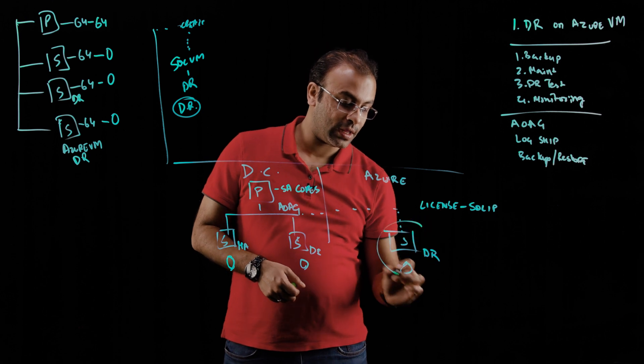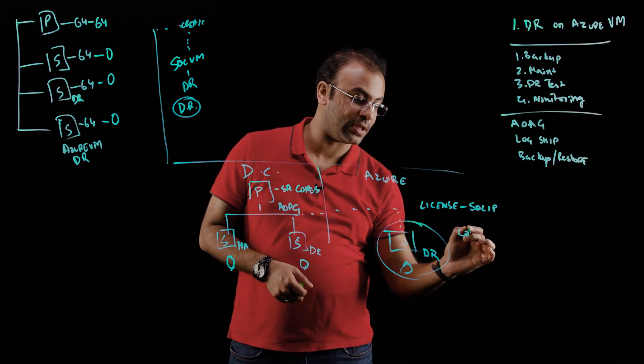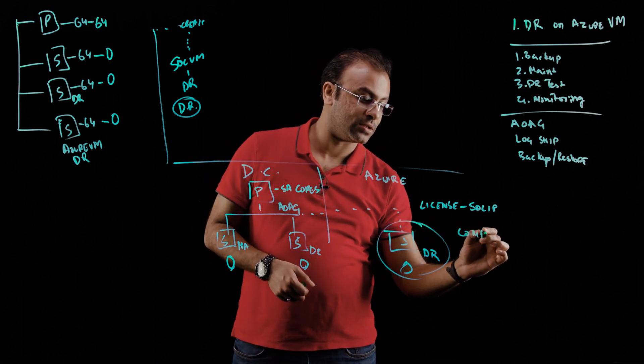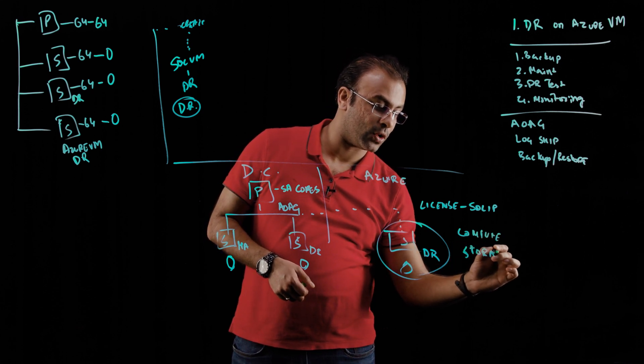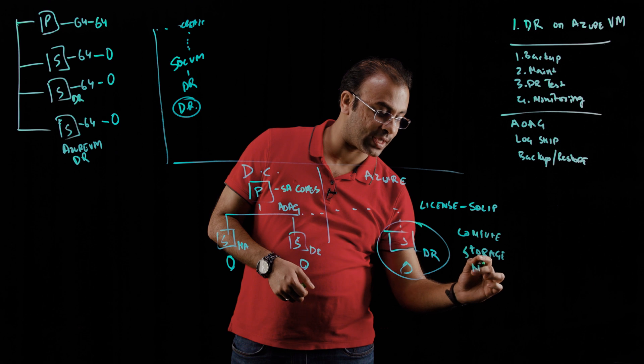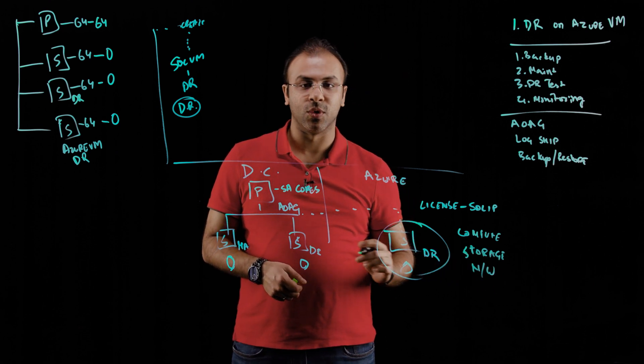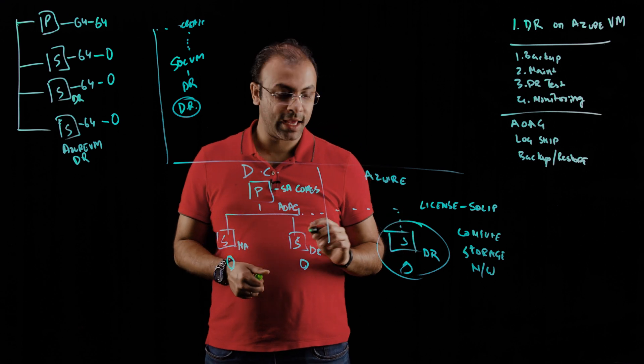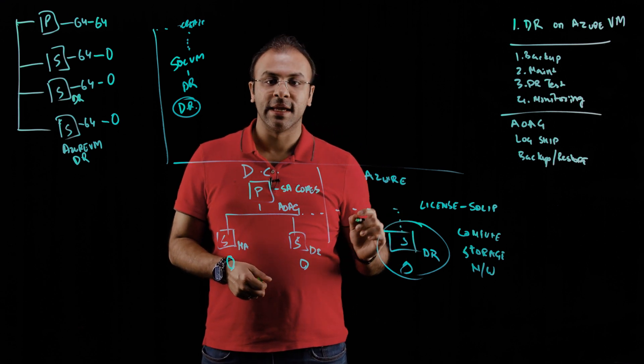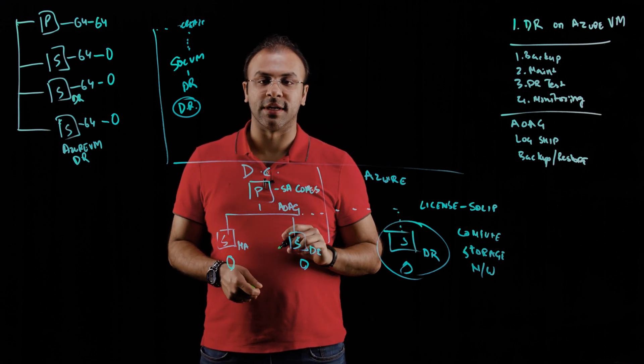So in this scenario, this VM, you would pay for the infra cost, which means you're paying for compute, you're paying for storage, you're paying for your networking, but you're not paying for the SQL Server licenses on this virtual machine. These cores have to be lesser than or equal to the cores running on the primary.